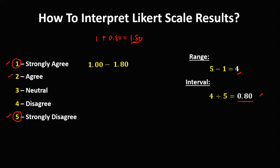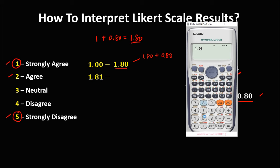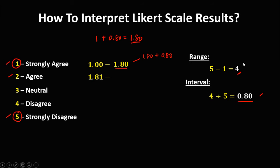Then for the second scale, since the upper limit is 1.80, just add 0.01 for the lower limit of the second scale, so that's 1.81. Then for the upper limit, 1.80 plus the interval 0.80 equals 2.60. So for the second scale, the upper limit is 2.60.